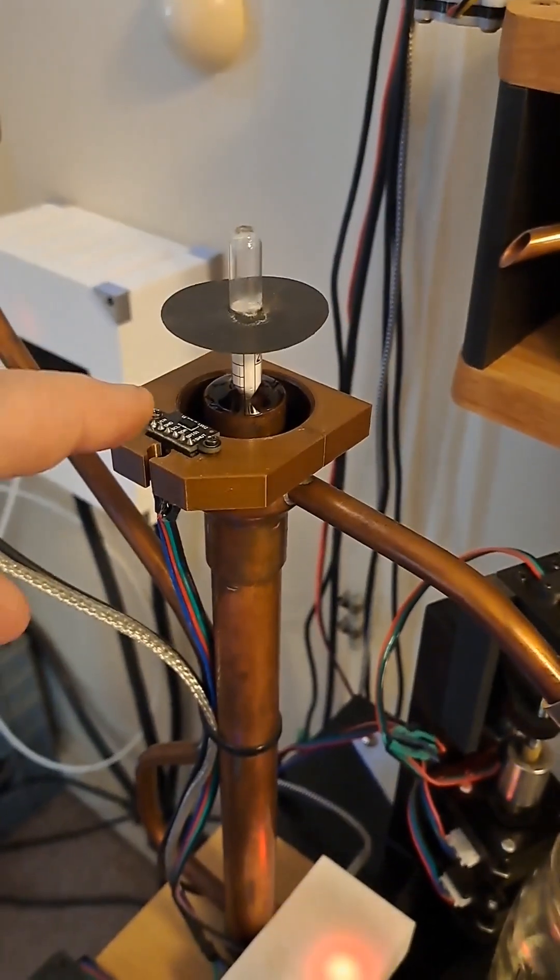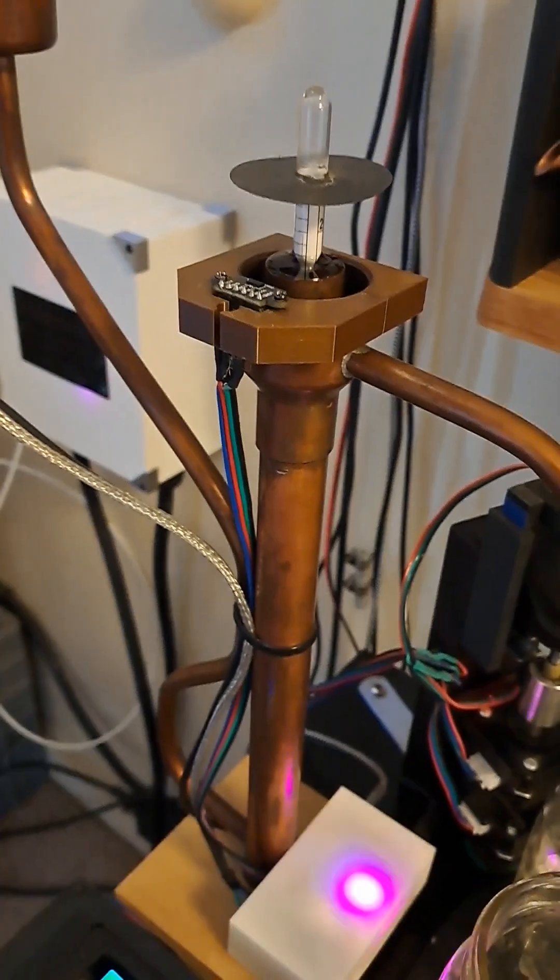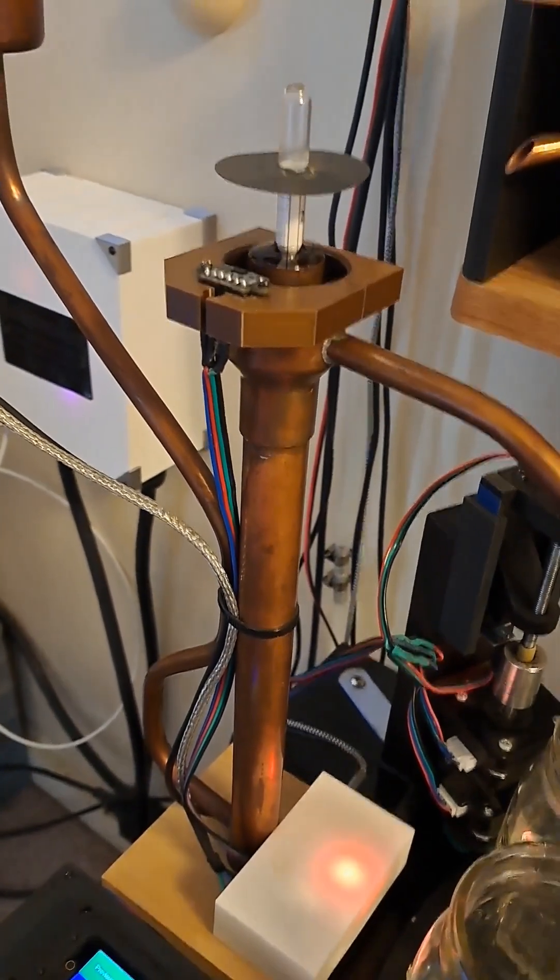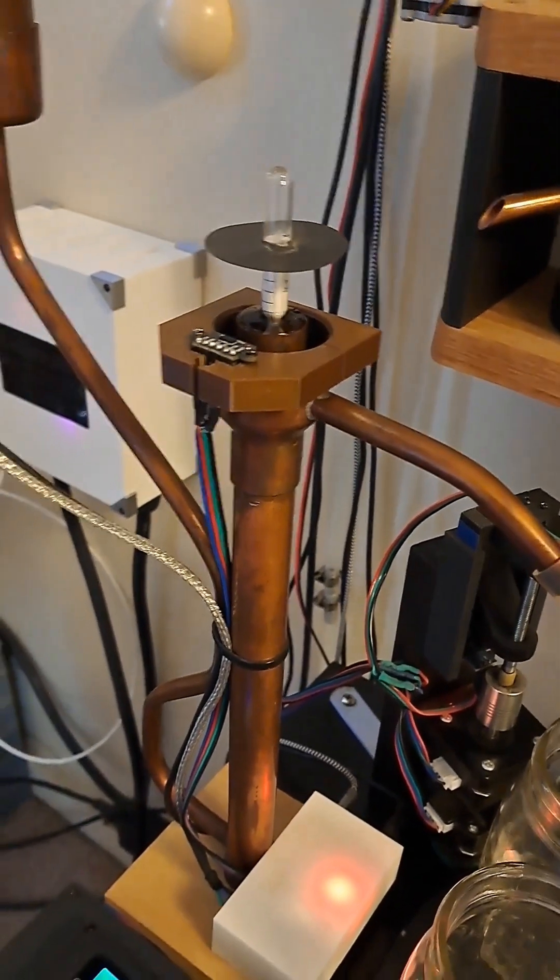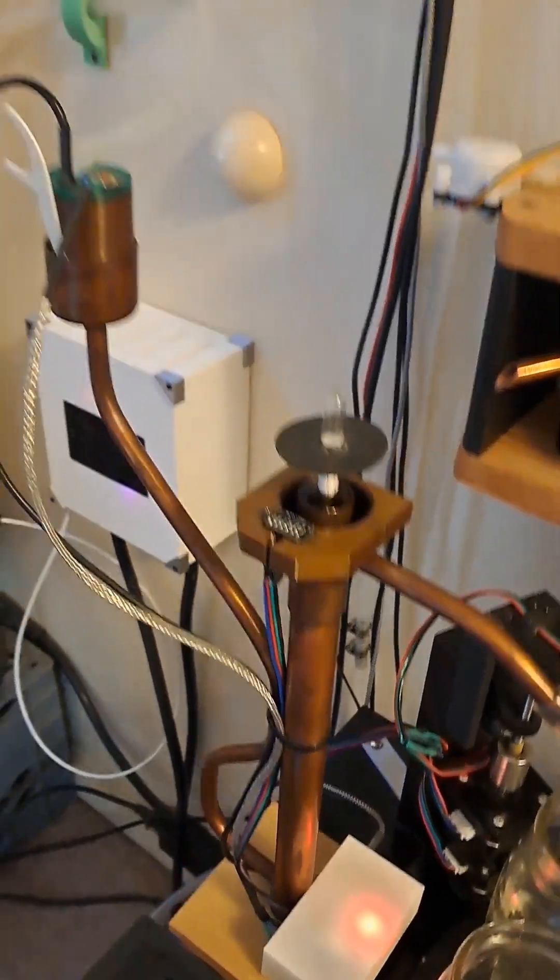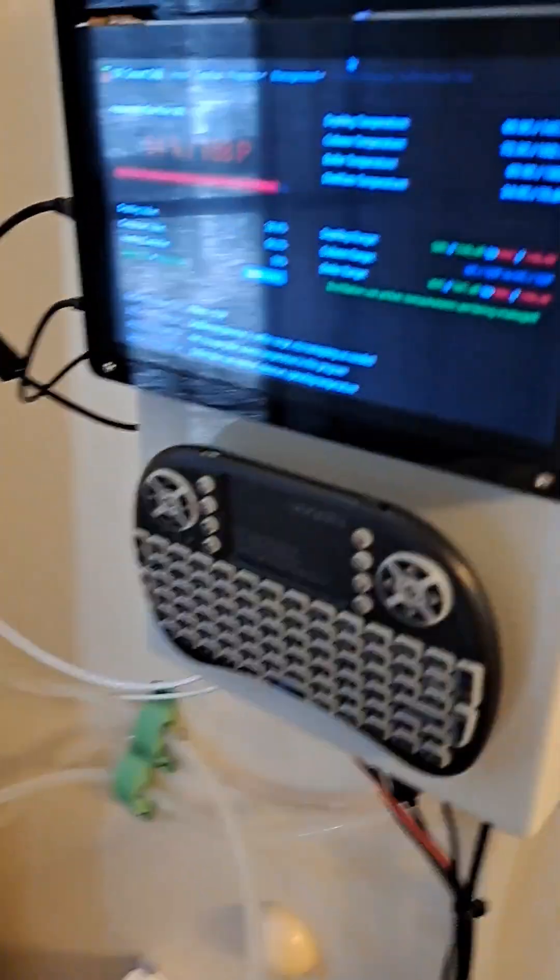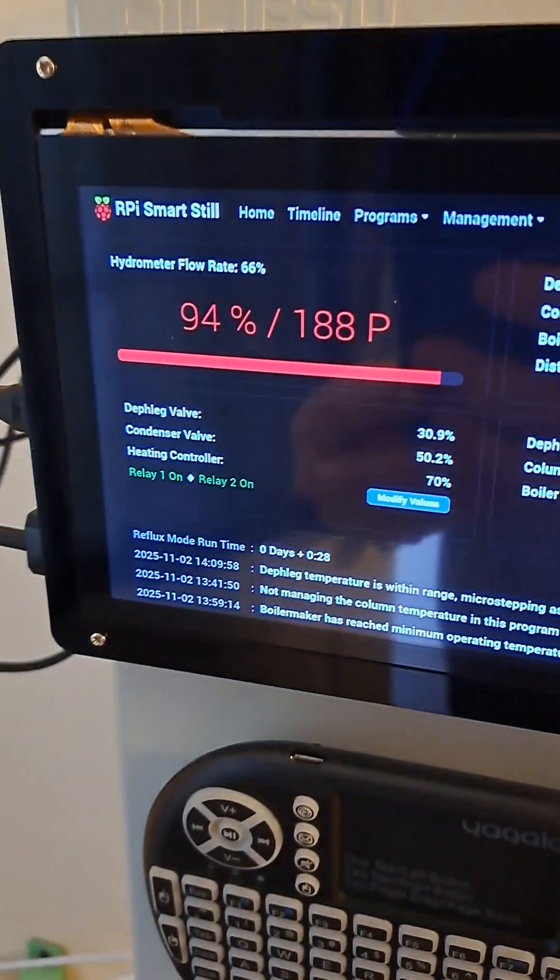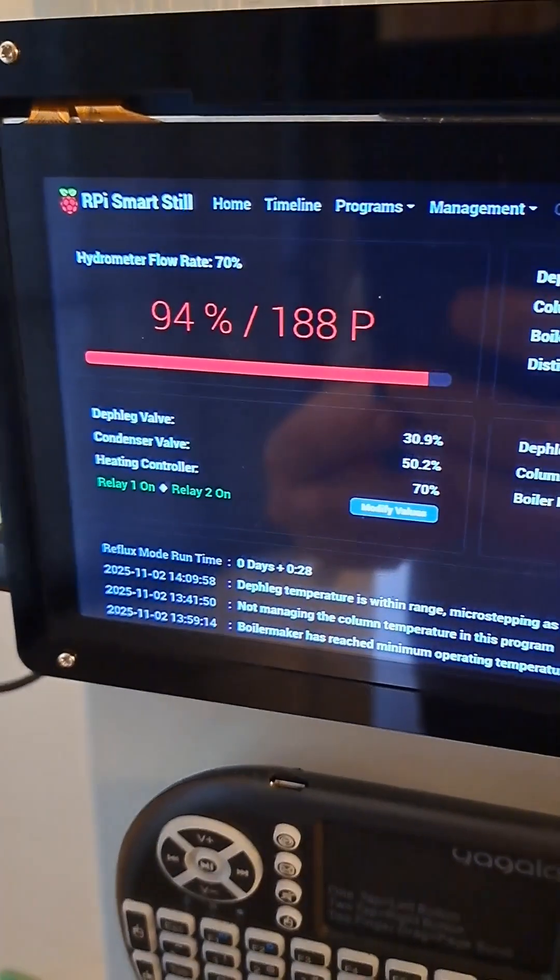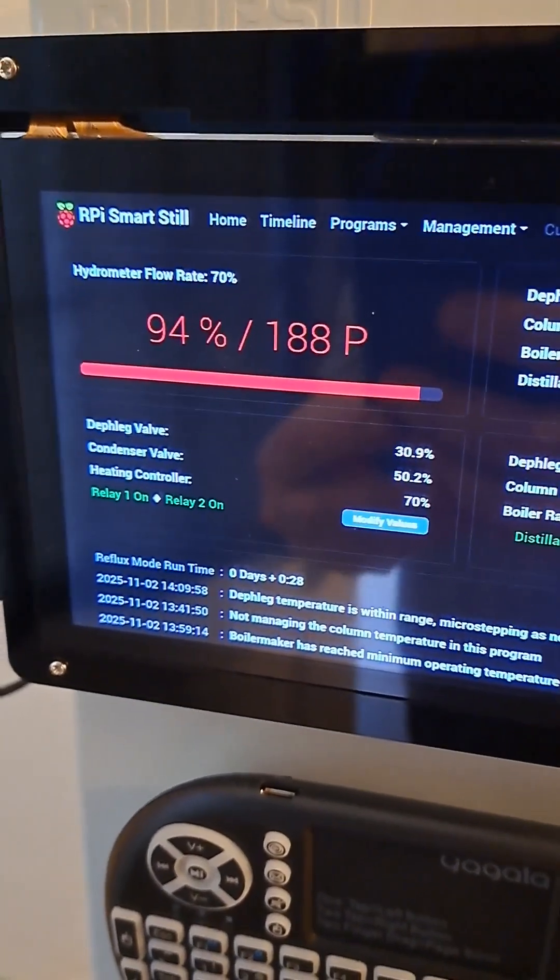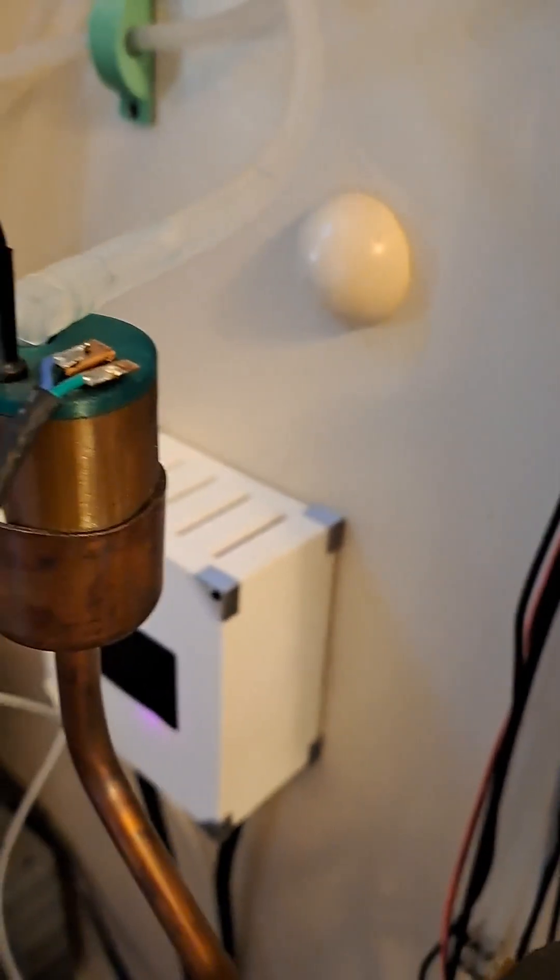It reads the distance from there to that reflector that's stuck to the top of the hydrometer and it translates that distance into proof. That's how it converts it to an electronic reading. And then this thing up here...